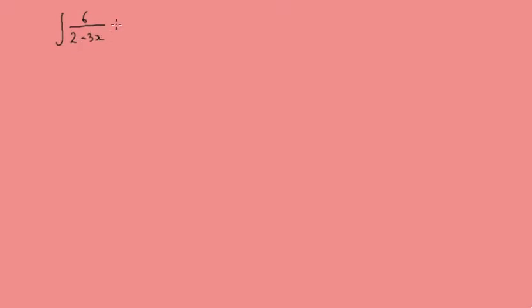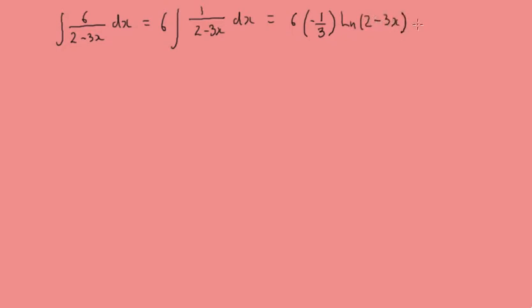Let's do another one: integrate 6 over (2 minus 3x) dx. We take the 6 out, and this time it's going to be minus one third, giving us 6 times minus one third times log(2 minus 3x) plus c. This time we need 2 minus 3x greater than 0. Rearranging that, we get x less than 2 thirds. So the answer is minus 2 log(2 minus 3x) plus c for x less than 2 thirds.